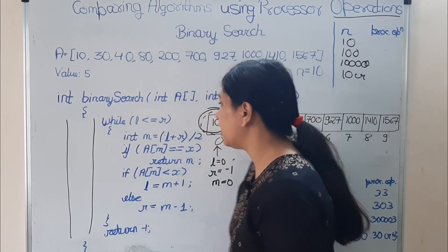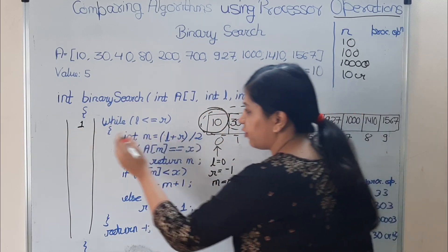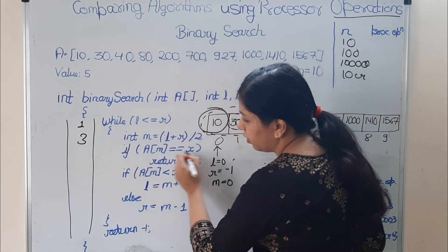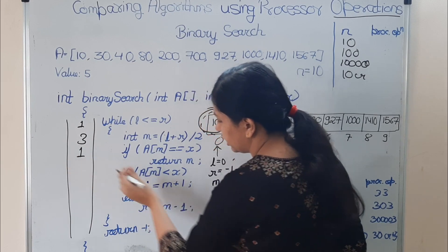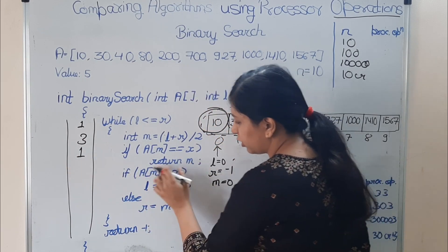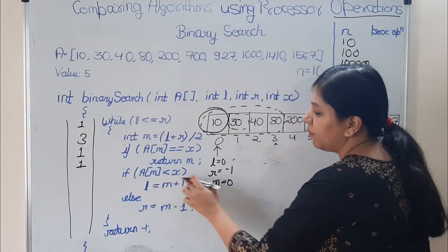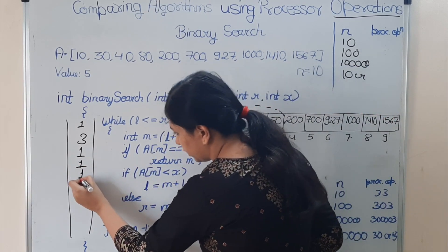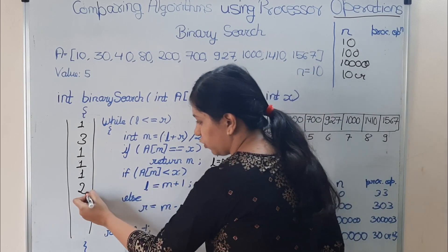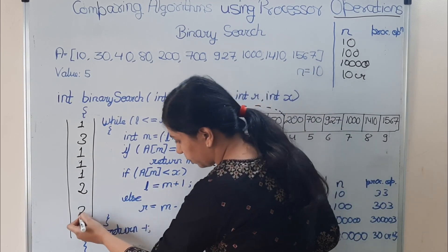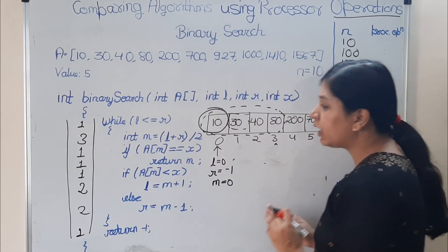Now let's count processor operations per line. The loop condition check is 1 operation. Finding m has 1, 2, and 3 operations. The equality check a[m] == x is 1 operation, and the return inside is also 1. The less-than check a[m] < x is 1 operation. The l update is 2 operations, and the else r update is also 2 operations. The final return -1 is 1 operation.